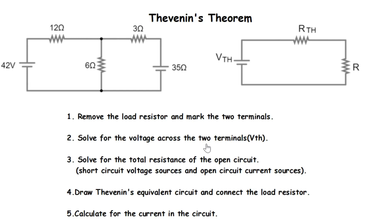After solving for the voltage across the two terminals, you solve for the total resistance of the open circuit. But before you can solve for the total resistance, you have to short-circuit voltage sources and open-circuit current sources. If you have any voltage source in the circuit, you short-circuit it, and if you have any current source, you open-circuit it. Then after that, you draw the Thevenin equivalent circuit and connect the load resistor, and from there you calculate for the current in the circuit.